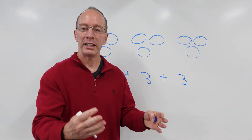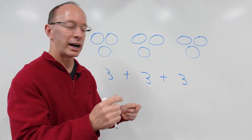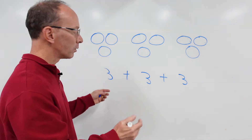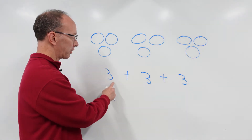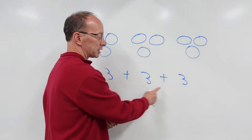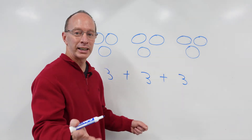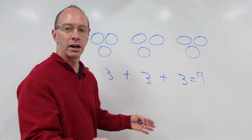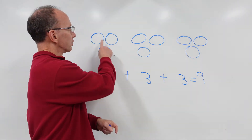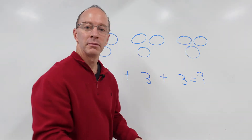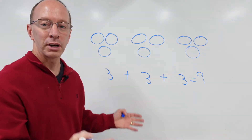This is what repeated addition is — adding the same number over and over. So now we're going to add all this together. Three plus three equals six, six plus three equals nine. You can also count all the objects: one, two, three, four, five, six, seven, eight, nine. So three groups of three equal nine.